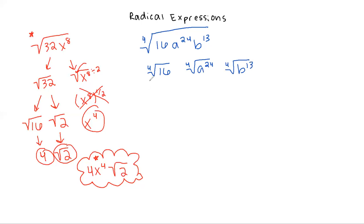The fourth root of 16 actually does work out evenly. If you type it into your calculator, the fourth root of 16 is 2, because 2 times 2 times 2 times 2 is 16. For the fourth root of a to the 24th, that's like doing 24 divided by 4 — you divide by the number that's out front in the root — so that gives us a to the sixth.